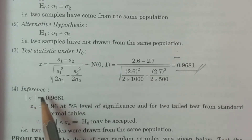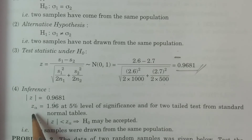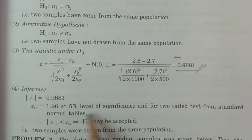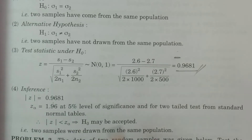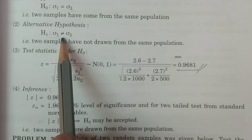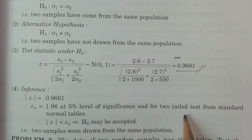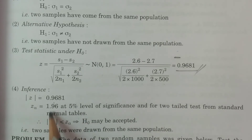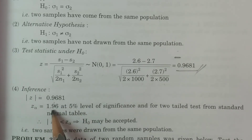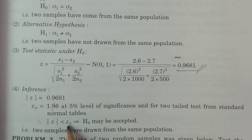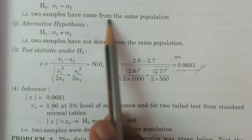Fourth part — comparison and conclusion: We calculate |Z| = 0.9681. The critical value Z_alpha at the 5% level of significance (since none was specified) for a two-tailed test from the standard normal tables is 1.96. Since |Z| = 0.9681 < Z_alpha = 1.96, we have |Z| < Z_alpha, which implies H0 may be accepted. That is, the two samples have come from the same population.